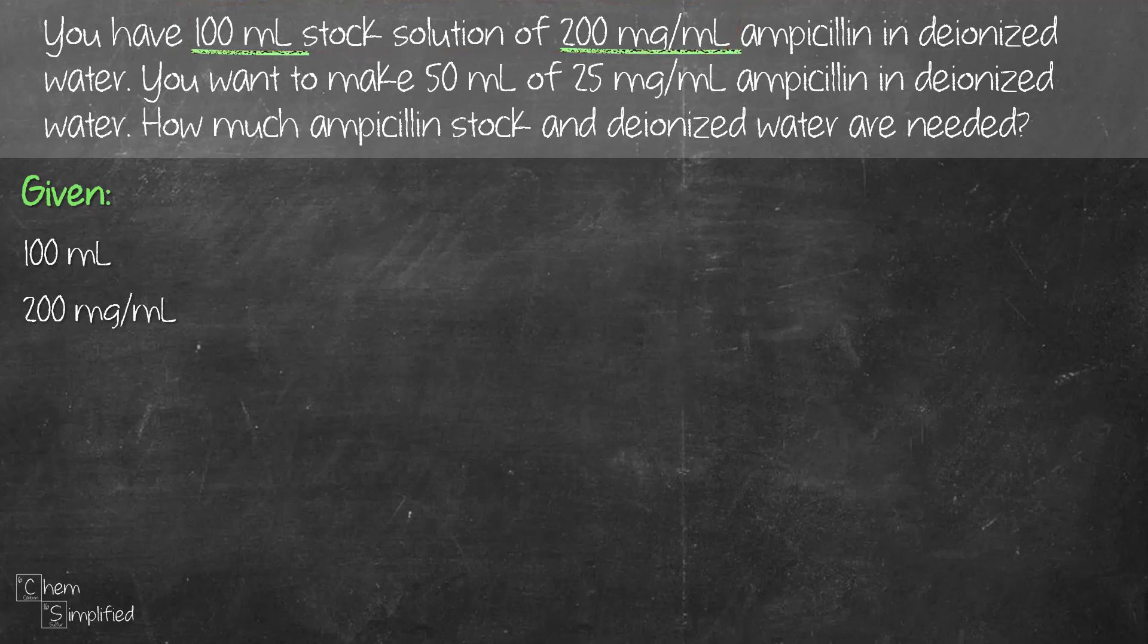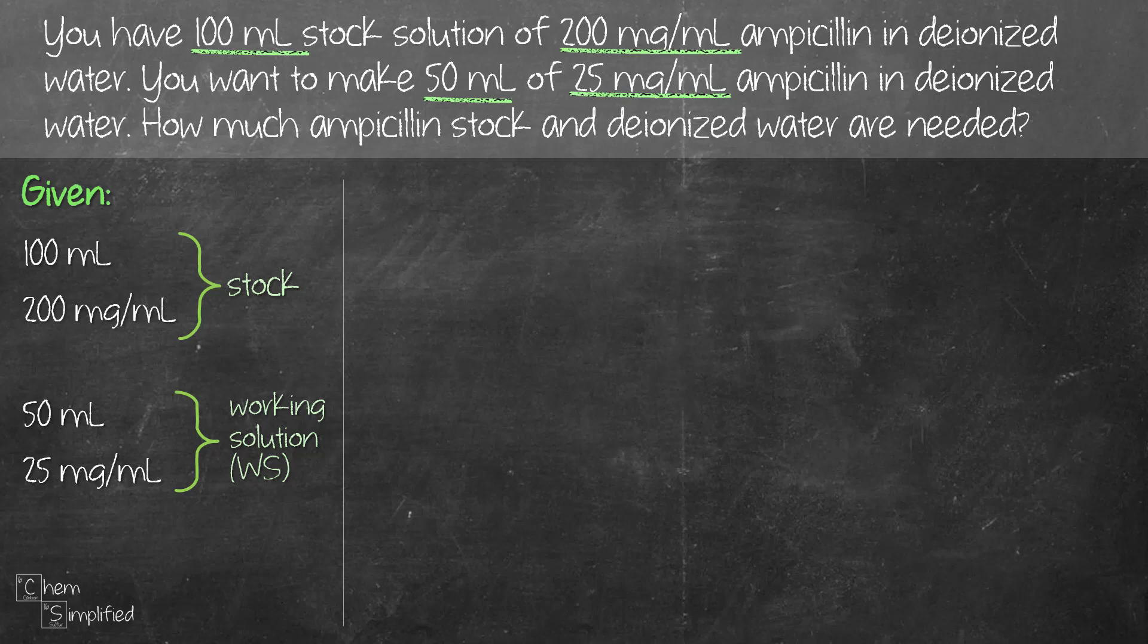And then we continue on with the second sentence. We have 50 ml of 25 mg per ml and that is another set of data. So that first set that we have in the first sentence, 100 ml and 200 mg per ml, that's for the stock solution which means that's the more concentrated ampicillin in deionized water. And we want to make a less concentrated solution so that makes that 50 ml and 25 mg per ml the working solution, which is a fancy way of saying a diluted solution made from the stock solution that we're going to use.